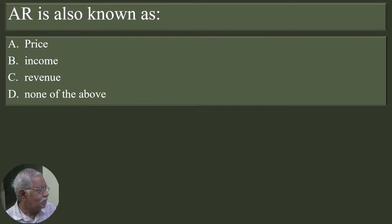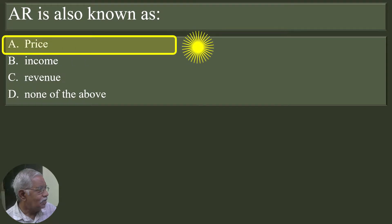AR is also known as price, income, revenue, none of the above. Price is the correct answer. Whatever be the market form, average revenue is always equal to price.